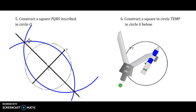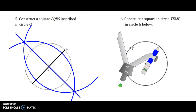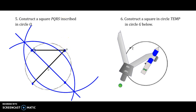Where the bisector intersects the circle, that is where you put the other two endpoints of your square. Here's one, here's two. We use the original endpoints of the diameter — that's why P is one of them. We connect those points to form the square. If you only put the points and don't make the final figure, you are not done and you will lose credit.